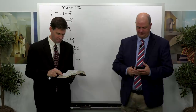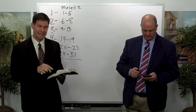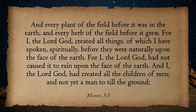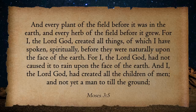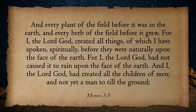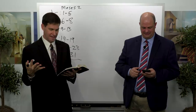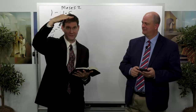You'll notice that as you get into Genesis 1 and 2, and Moses 2 and 3, verse 5 notifies us: 'Every plant of the field before it was in the earth, every herb of the field before it grew, for I the Lord created all things of which I have spoken spiritually before they were naturally upon the face of the earth.' Then it says all the children of men were created, but not yet a man to till the ground. Wait — didn't we just create Adam back at the end of chapter 2? Now he's saying not yet a man to till the ground. So we realize there are these two creations: a spiritual creation and then the physical creation.